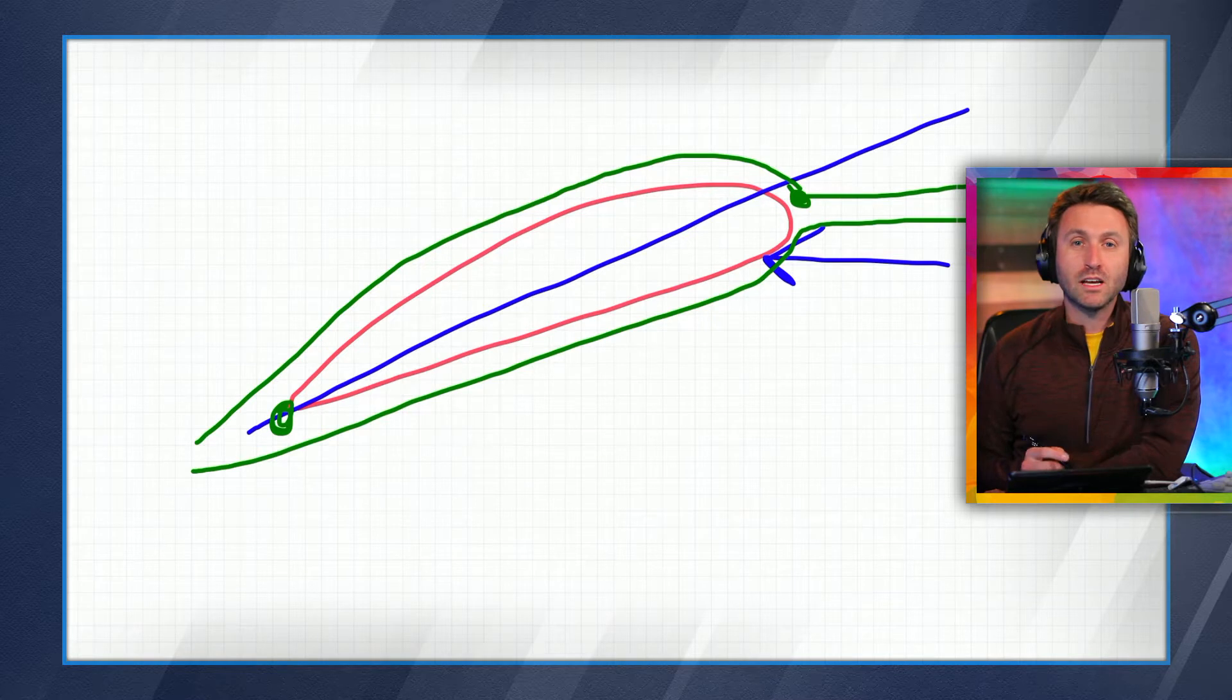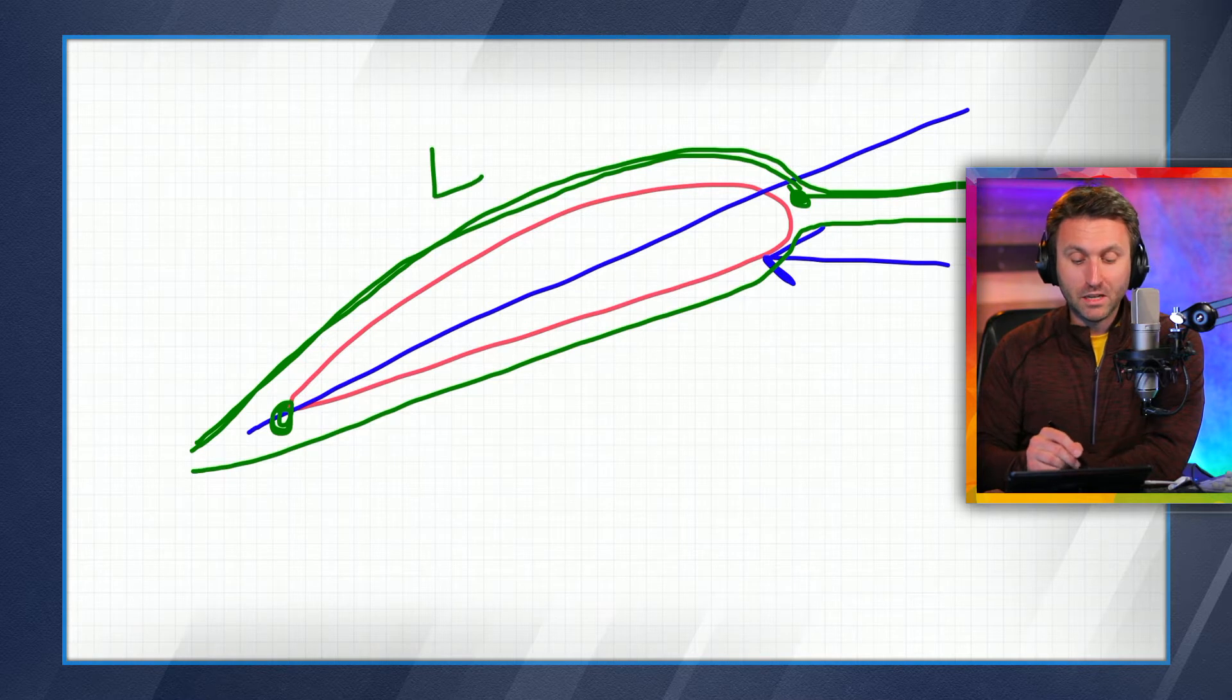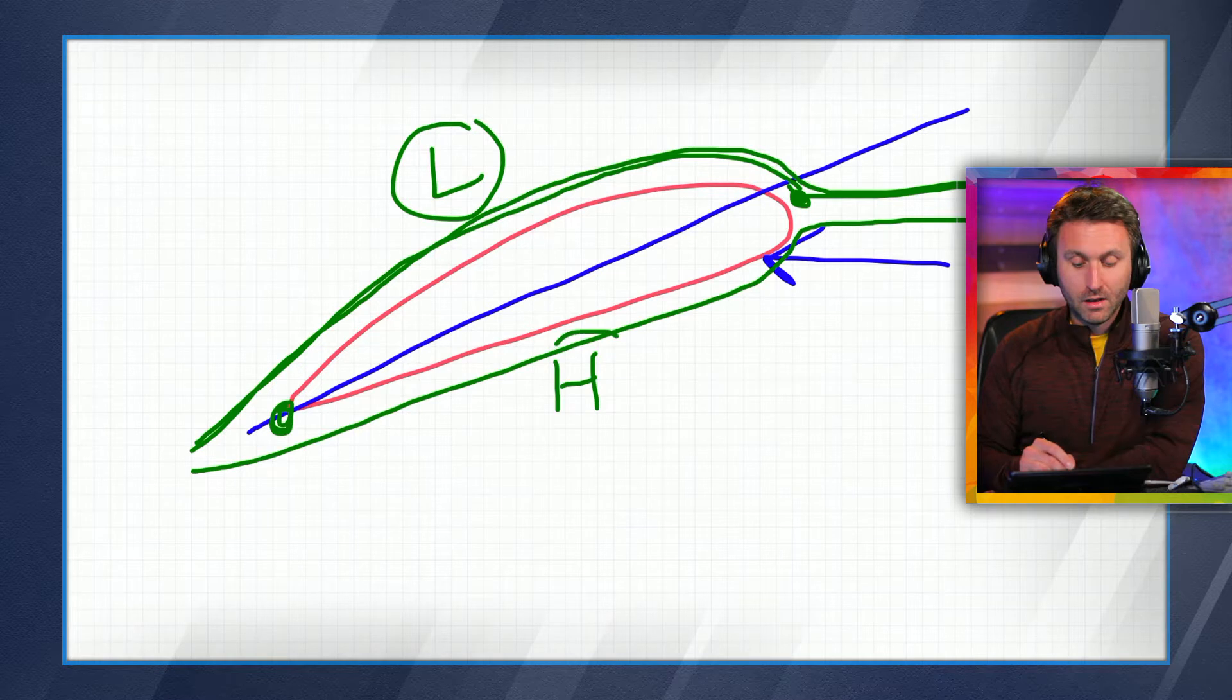Now, Bernoulli's principle says that as the velocity of a fluid increases, its pressure decreases. That relative wind on the top side has to go a farther distance to catch up. So because it's sped up, its pressure went down. There's low pressure on the top and the pressure is higher on the bottom.